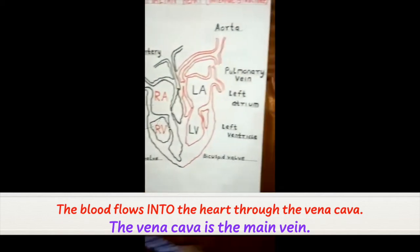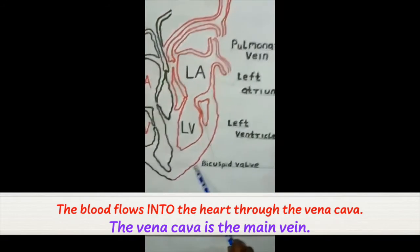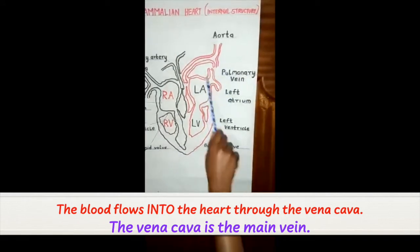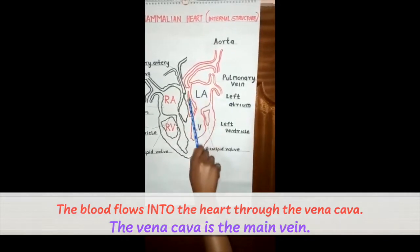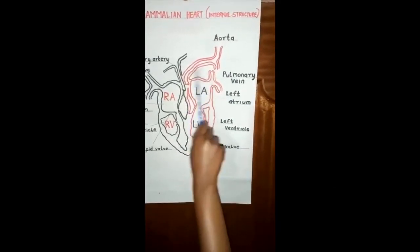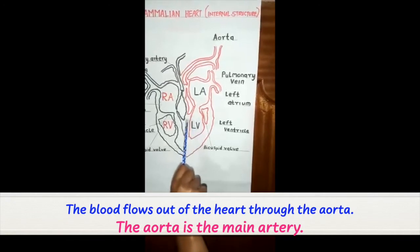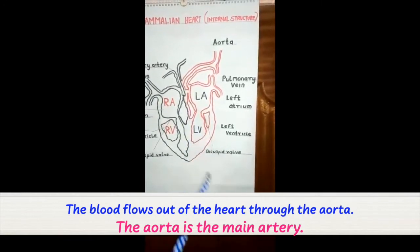The blood then flows from the lungs into the heart back again through the pulmonary vein into the left auricle. And from the left auricle, it flows to the left ventricle through a valve known as the bicuspid valve.